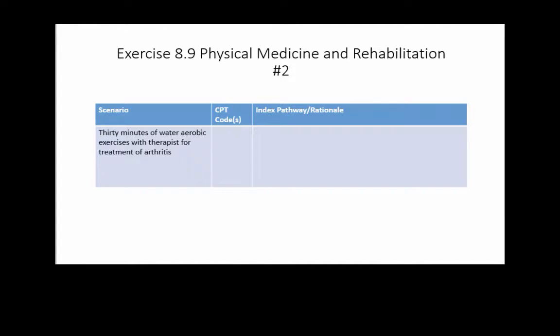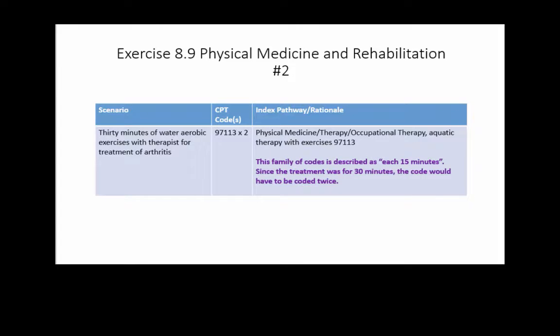For example: 30 minutes of water aerobic exercises with a therapist for the treatment of arthritis. Your CPT code would be 97113 times 2, because when you look up this code, 97113 is described as each 15 minutes — so if your patient was seen for 30 minutes, you need that code twice. Your main term is physical medicine/therapy/occupational therapy, and aquatic therapy with exercises would be your subterm.